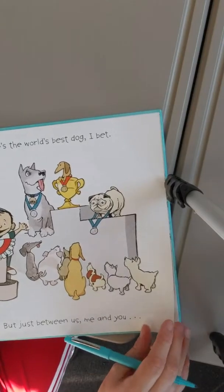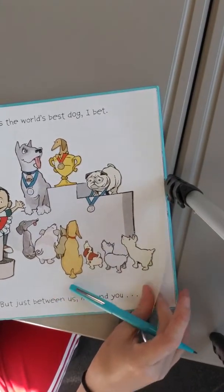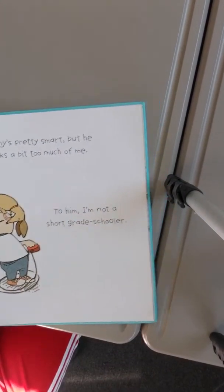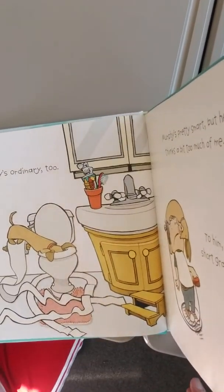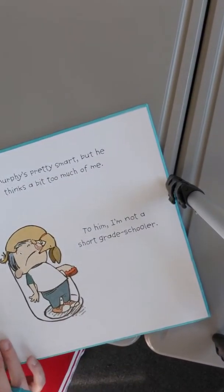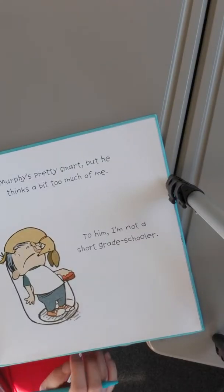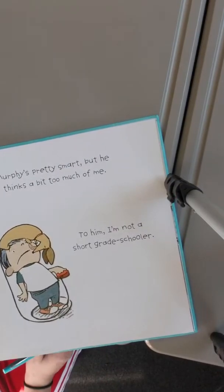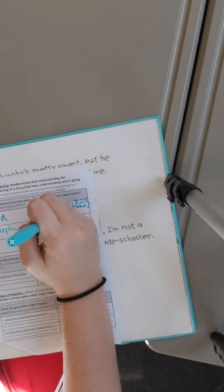Okay, but just between us, me and you, Murphy's ordinary too. Murphy's pretty smart, but he thinks a bit too much of me. To him, I'm not a short grade schooler. So here we could add grade schooler.